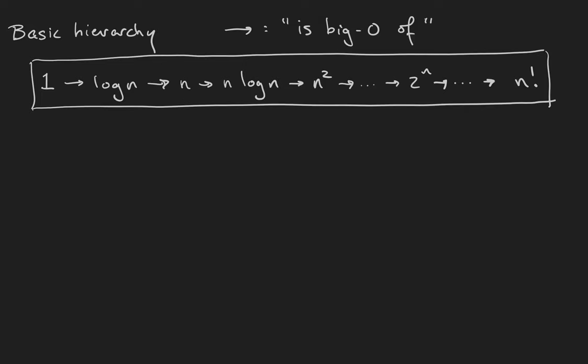The constant sequence 1 is big O of the base 2 logarithm of n, which is big O of n, which is big O of n times the base 2 logarithm of n, which is big O of n squared, which is big O of any higher degree polynomial, which is big O of the exponential function 2 to the n, which is big O of higher order exponential functions, which is big O of n factorial.